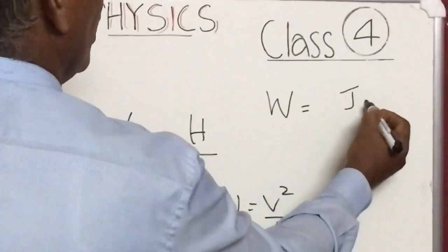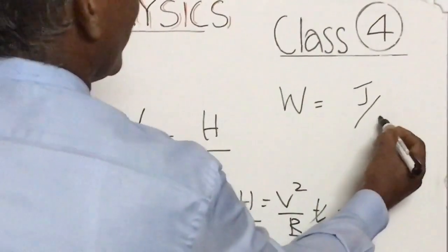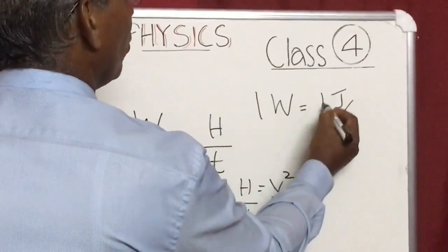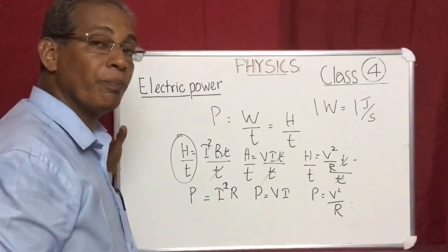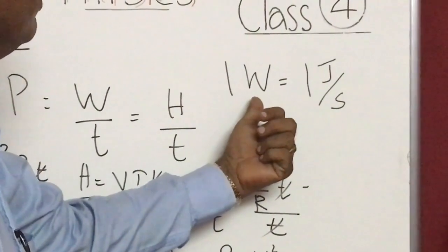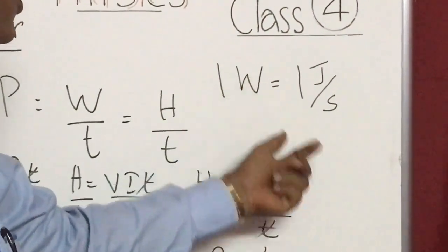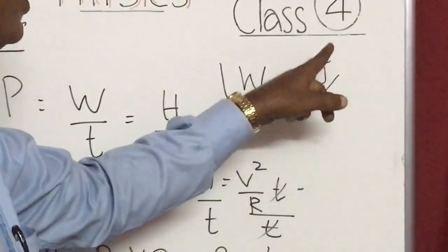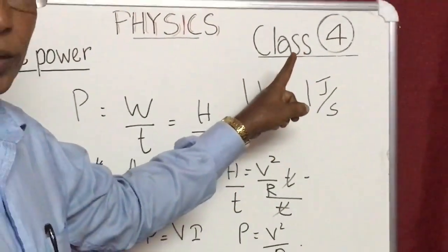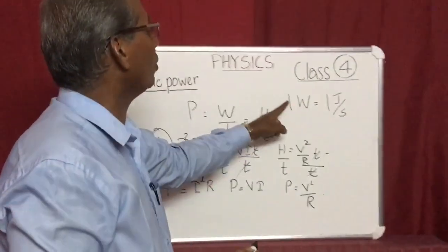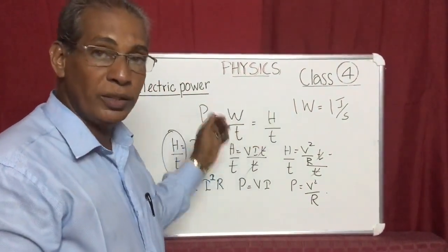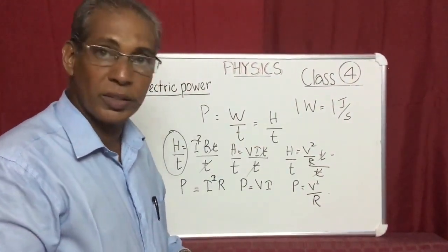We consider power P in the unit watt. Heat is a form of energy in joules, and time is in seconds. So we can write: one watt is equal to one joule per second. That is the rate of doing work — in one second we are getting one joule of work done.